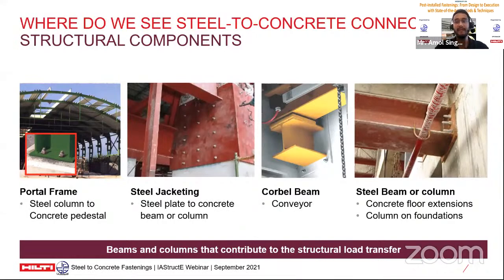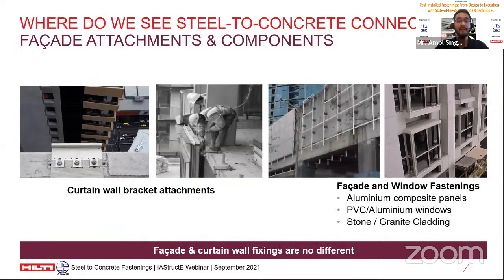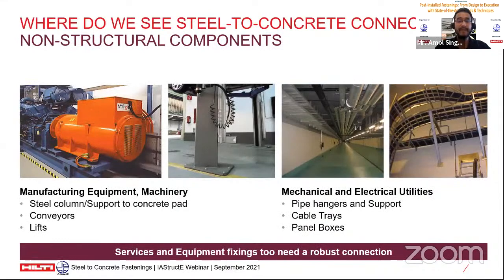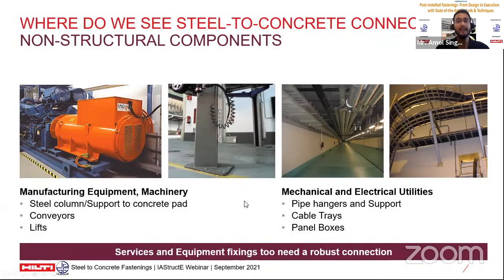The idea is to ensure a connection that acts in unison with the entire structure. Fasteners are also used to fix curtain walls and facade elements to the main structure, transferring their own loads and wind and seismic actions onto it. Non-structural elements include mechanical and electrical utilities fixed to soffits of slabs and beams, manufacturing equipment and machinery connected to floors, and industrial and engineering energy projects which also use such fixings.